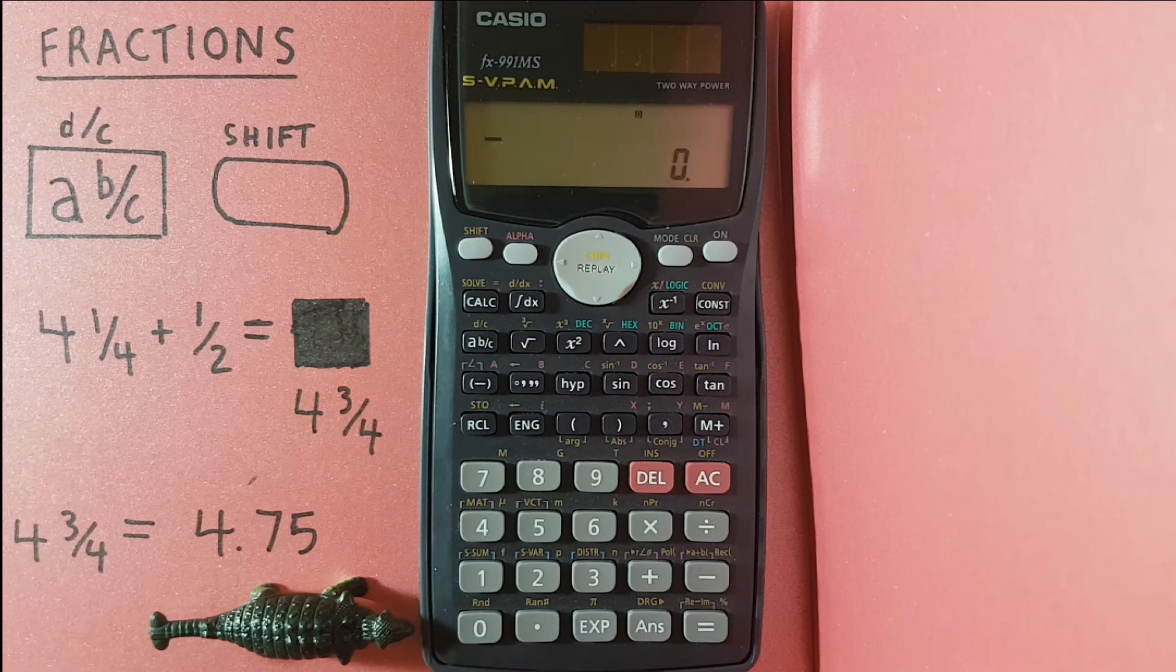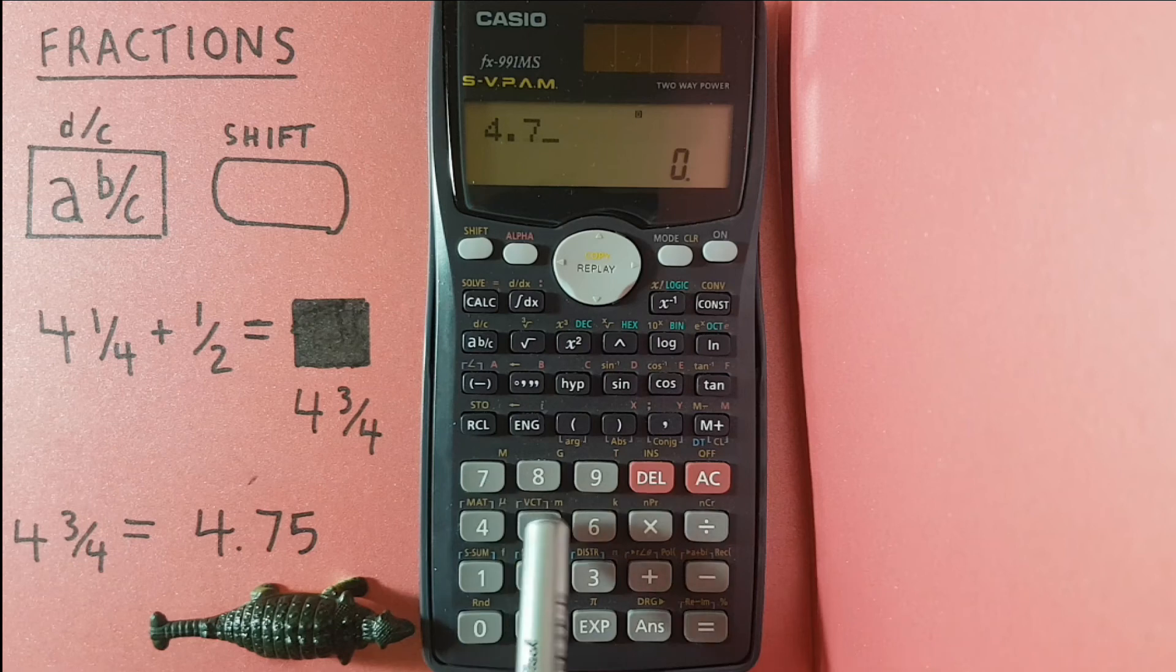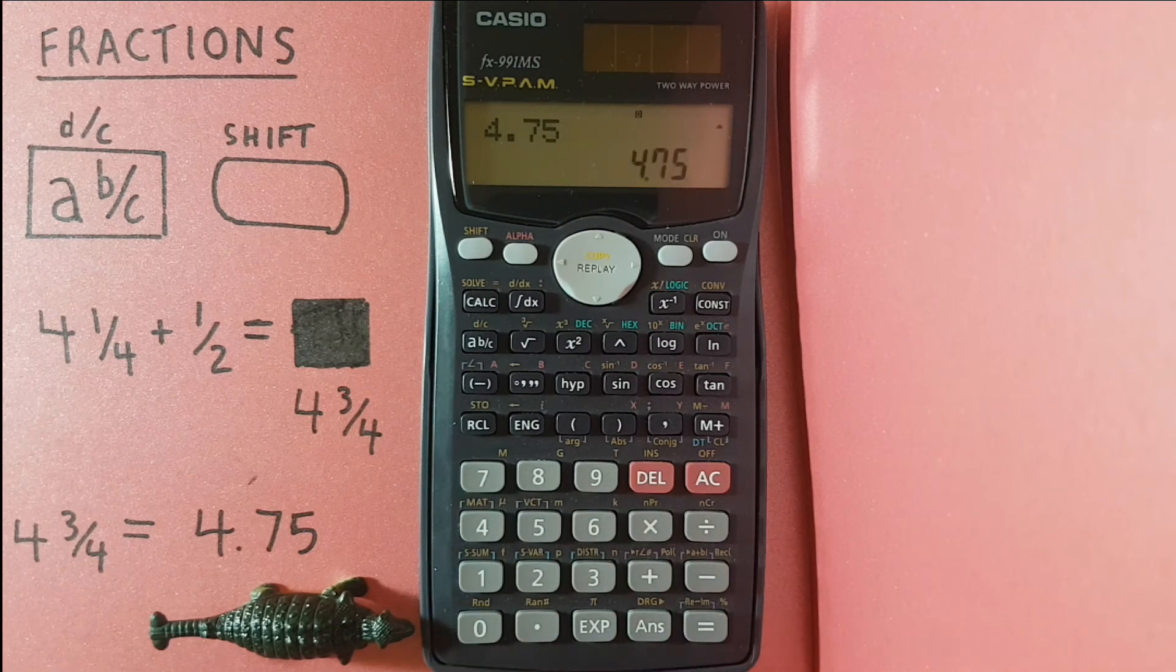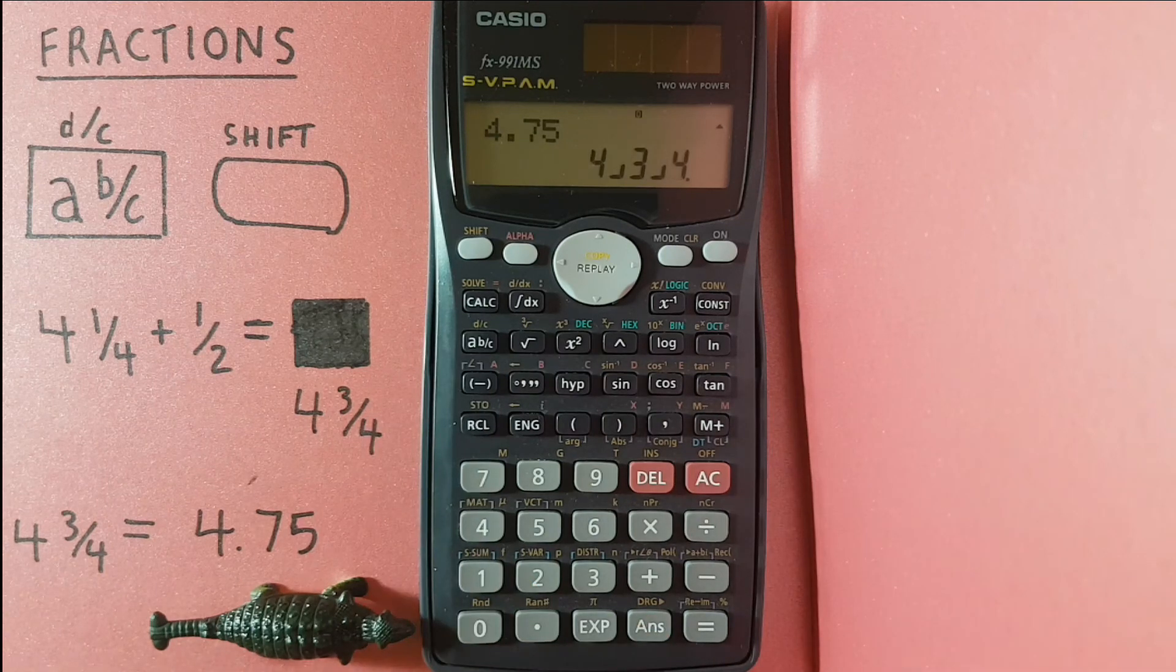We can also go from decimals to fractions. So if we enter 4.75, place it on the bottom, and hit the A B over C key, we get 4 and 3 quarters.